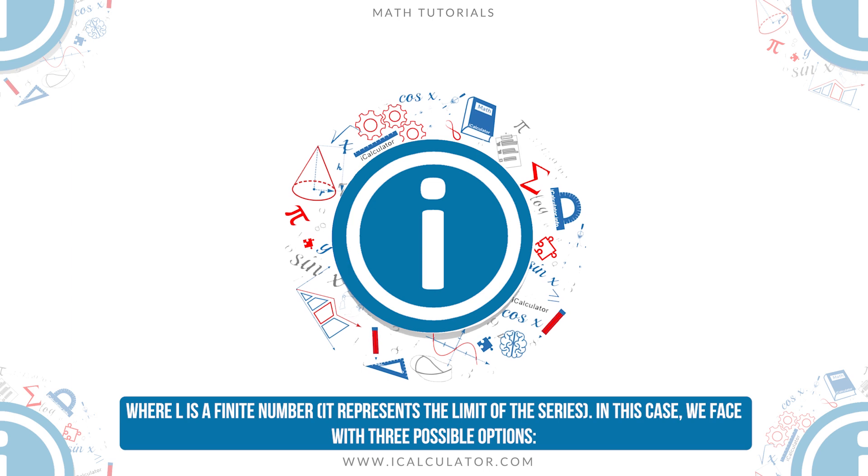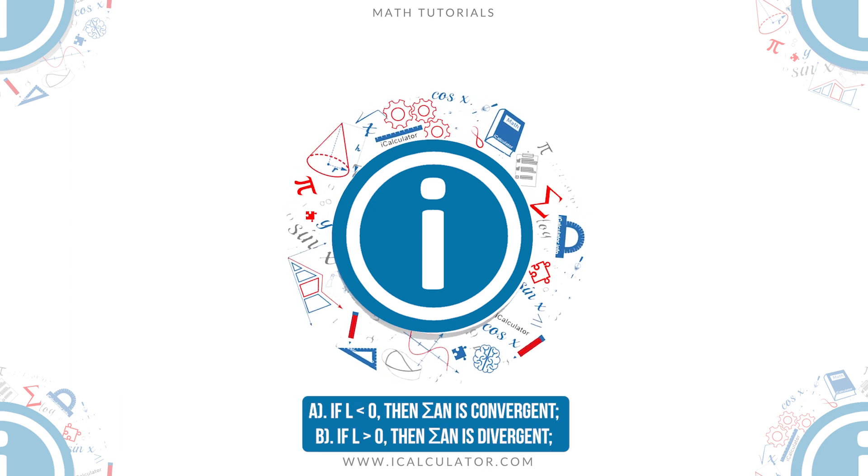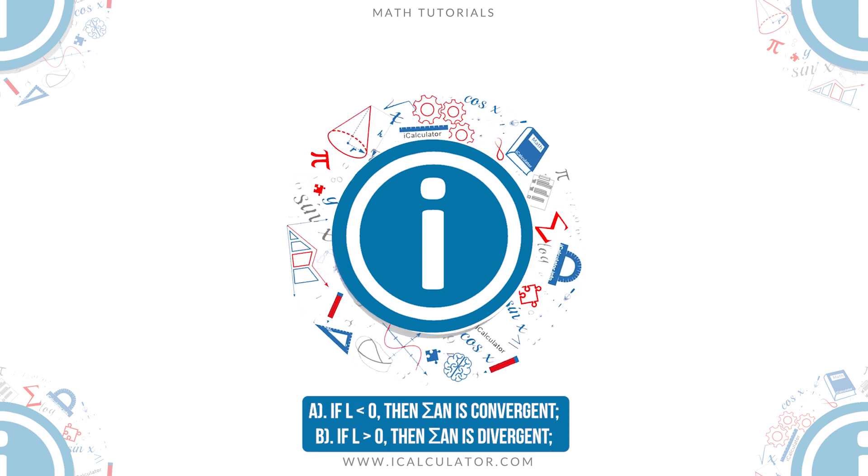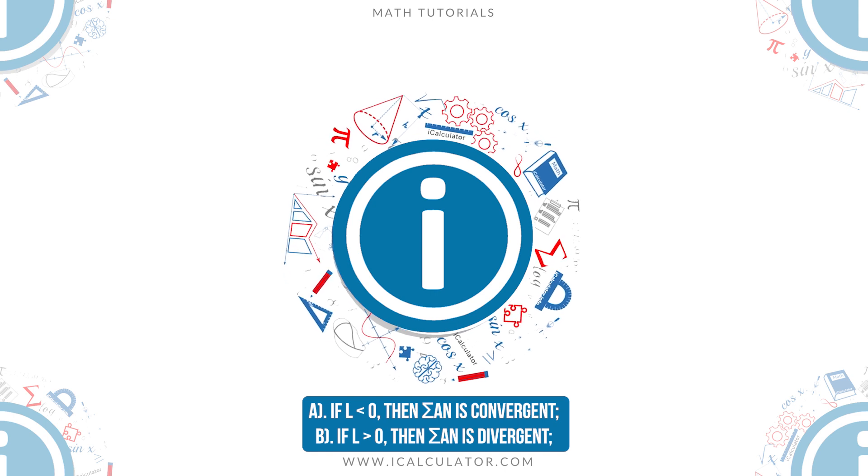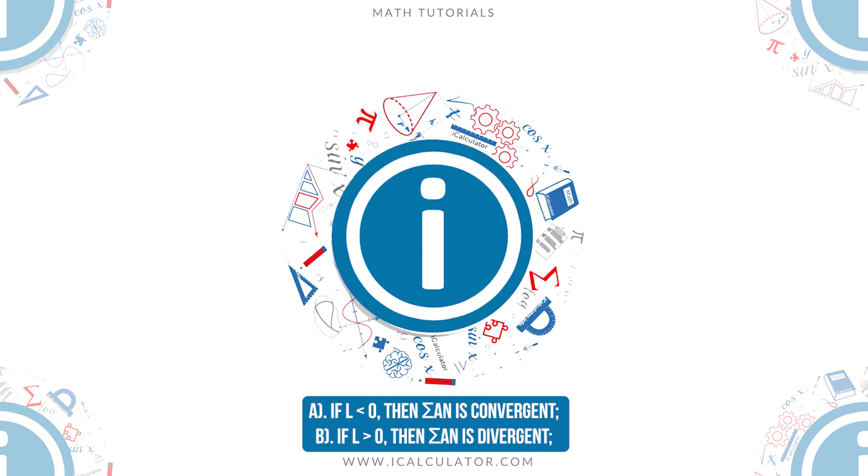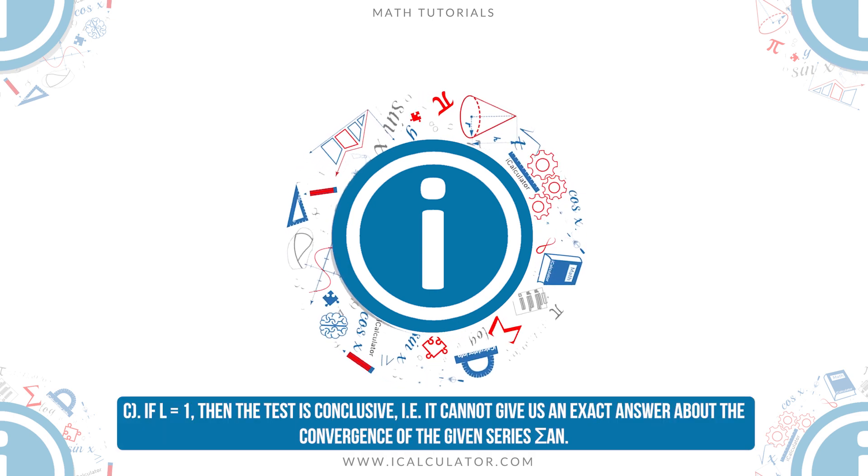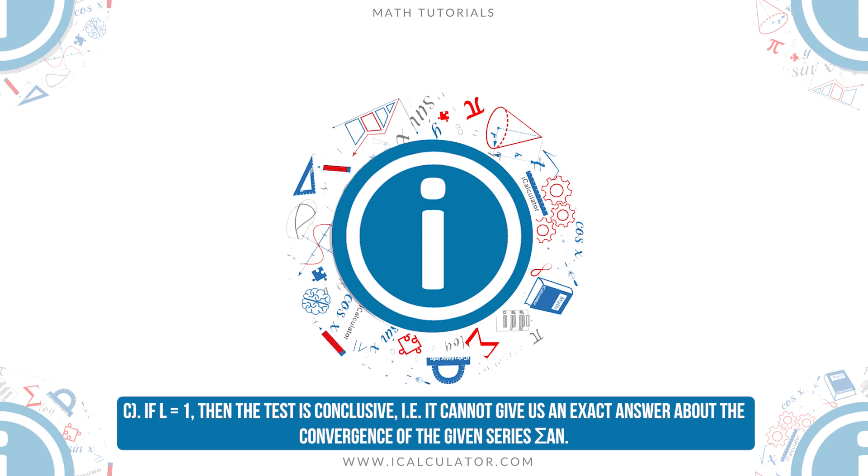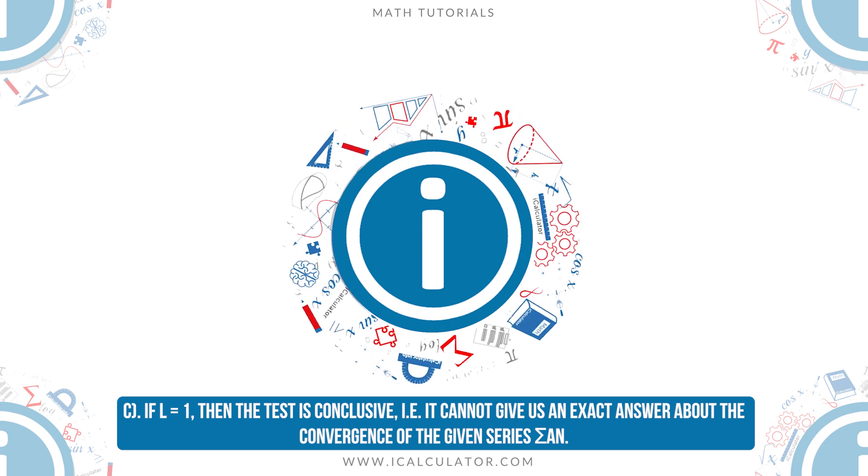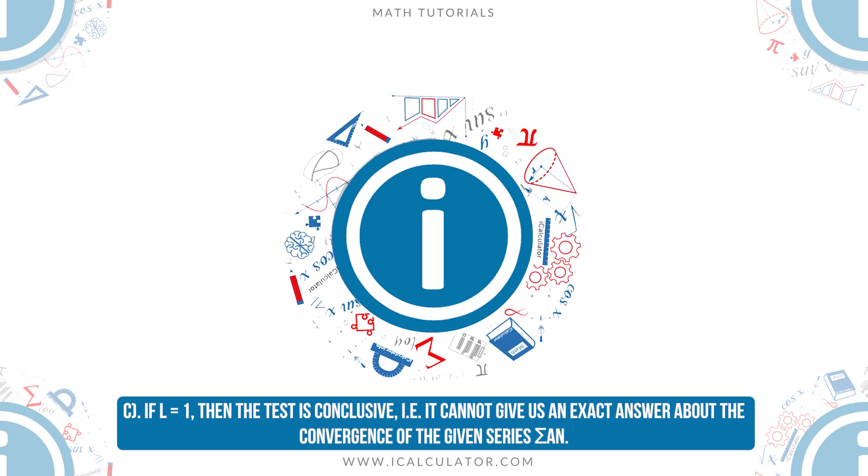In this case, we face with three possible options. A: if l less than 1, then sigma a_n is convergent. B: if l greater than 1, then sigma a_n is divergent. C: if l equals 1, then the test is inconclusive, i.e. it cannot give us an exact answer about the convergence of the given series sigma a_n.